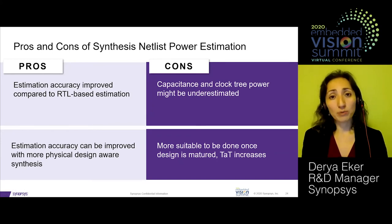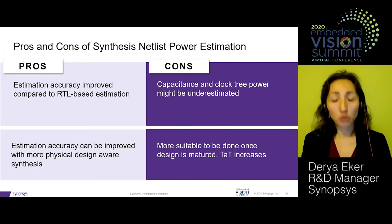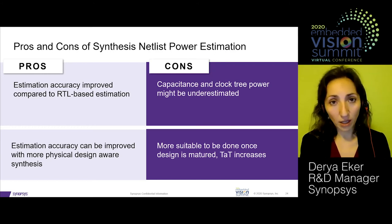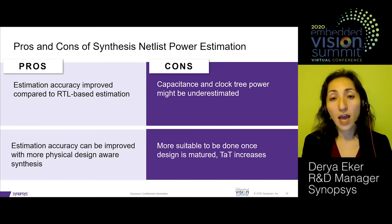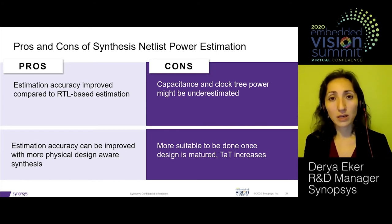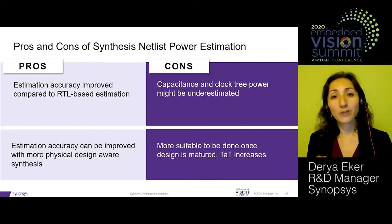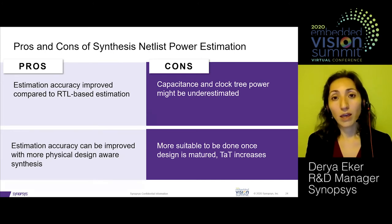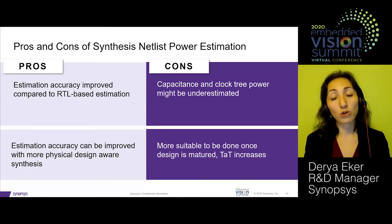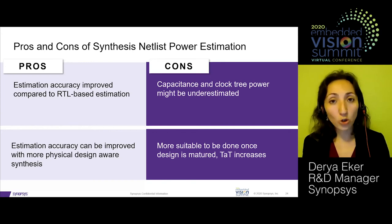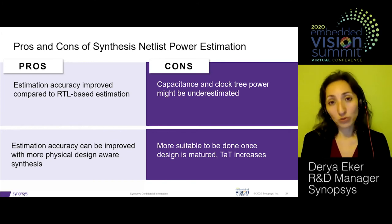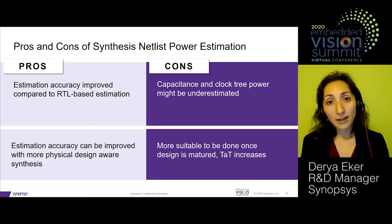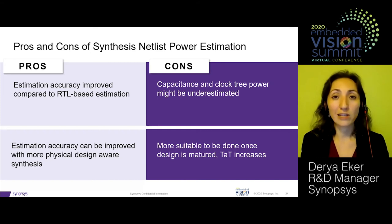Moving to synthesis netlist-based power estimation is a step forward for accuracy: you have memory replacement in place and a notion of a clock tree. However, this is still not the final clock tree, so capacitance and switching activity will still differ from sign-off runs by some percentage. Turnaround time also increases slightly at this abstraction level.